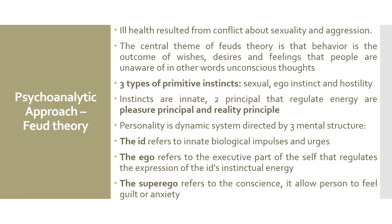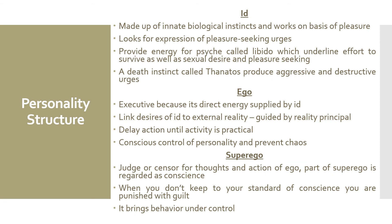The id refers to innate biological impulses and urges. The ego refers to the executive part of self that regulates the expression of ideas and instinctual energy. The ego is in touch with reality and can foresee the consequences of behavior. It is part of a system of thinking, planning and problem solving, and has conscious control of self. The superego refers to the conscience. The superego is like a judge or censor — if someone does not adhere to society's standards of acceptable behavior, the superego will allow you to feel guilt or anxiety. The id is made up of innate biological instincts and works on the basis of the pleasure principle, looking for the expression of pleasure-seeking urges. The id provides energy for the psyche or personality, called libido, which underlies the effort to survive as well as our sexual desire and pleasure seeking.